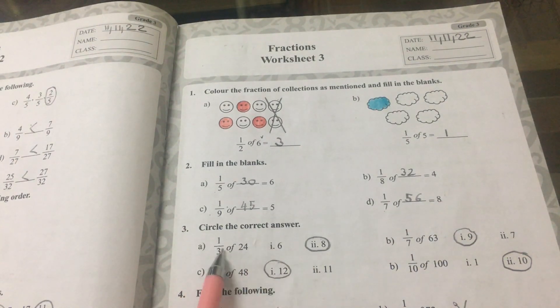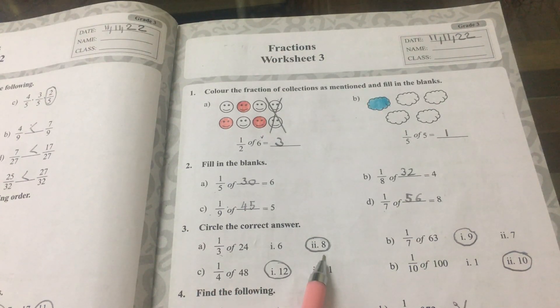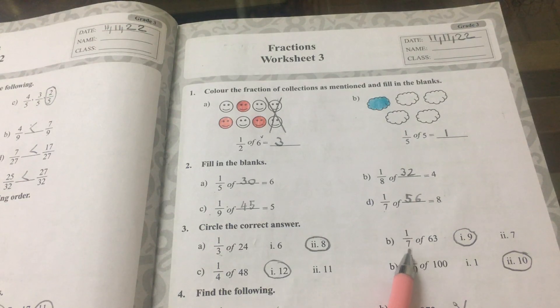Number 3. Circle the correct answer. 1 third of 24, the answer is 8. B, 1 seventh of 63, the answer is 9.